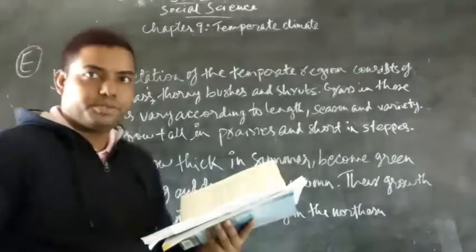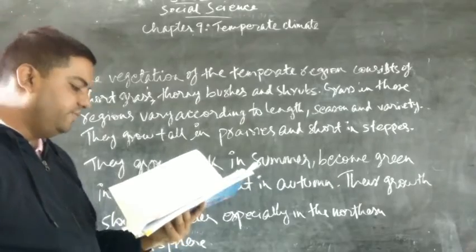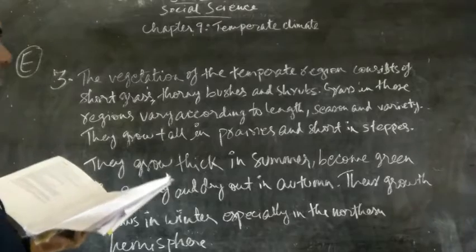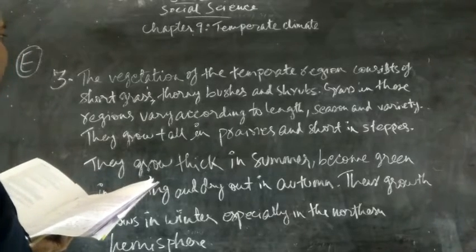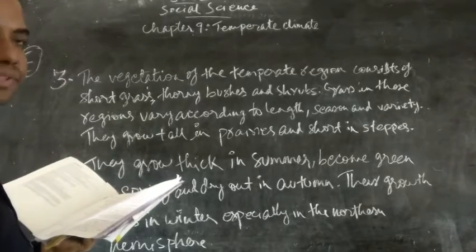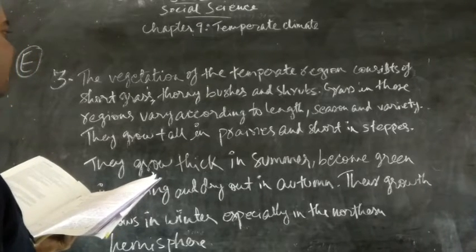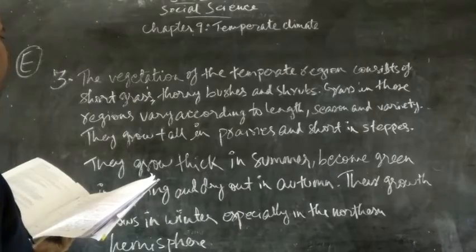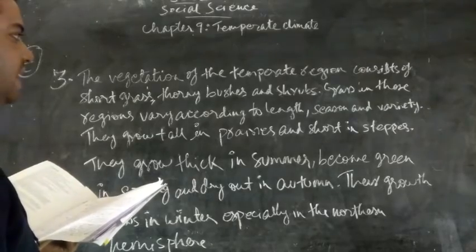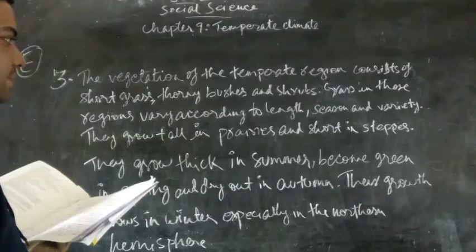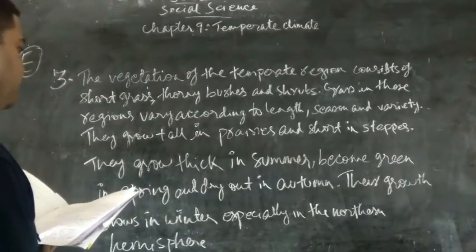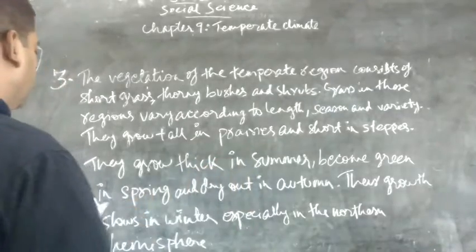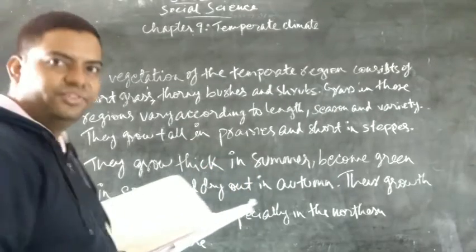Question number 3: List the important features of temperate vegetation. The vegetation of the temperate region consists of short grass, thorny bushes and shrubs. Grass in these regions varies according to length, season and variety. They grow tall in prairies and short in seas. They grow thick in summers, become green in spring and dry out in autumn. Their growth slows in winter, especially in the northern hemisphere.